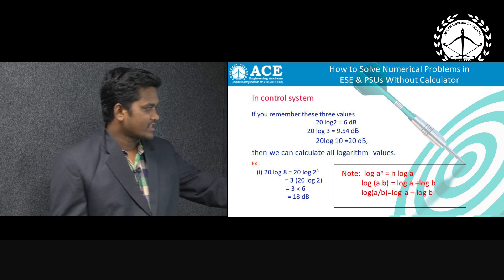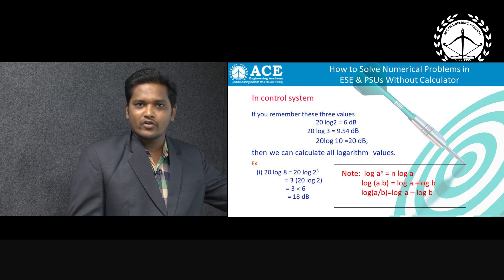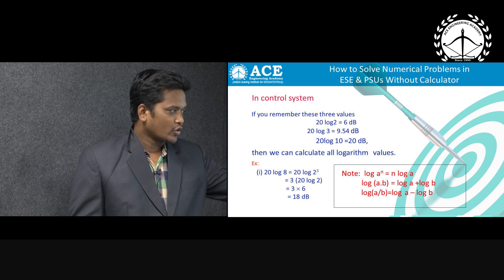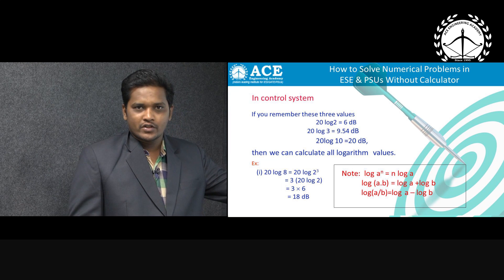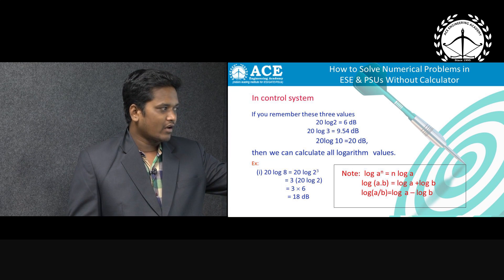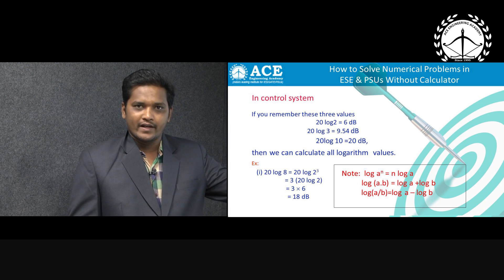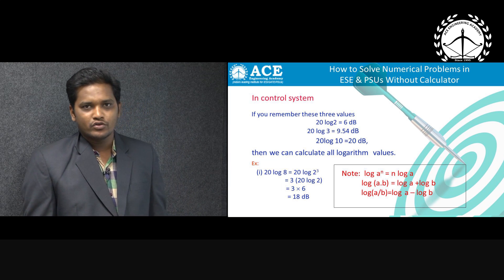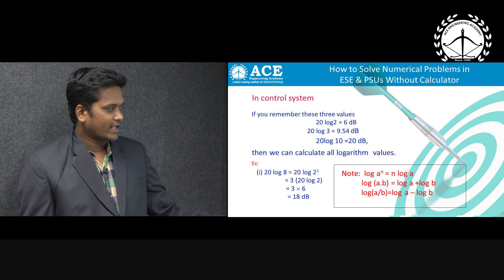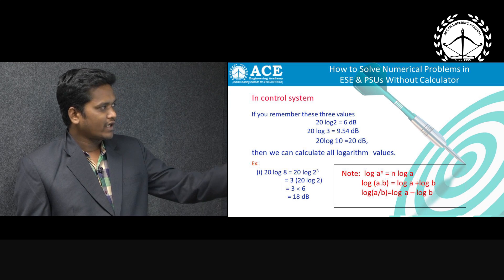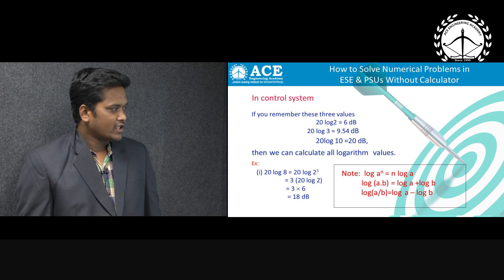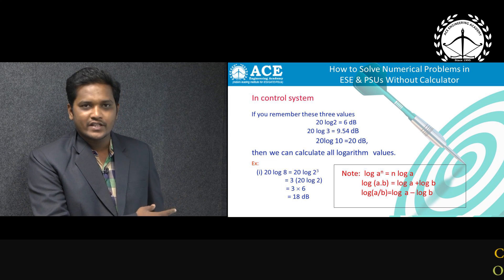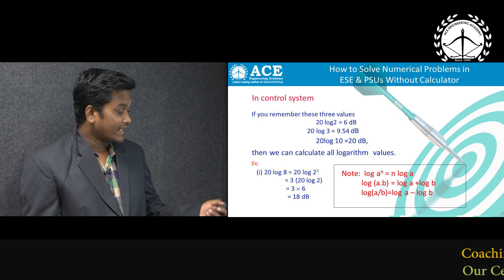First example: how to calculate 20 log 8. We know 8 can be written as 2³. Using the formula log(a^n) = n·log(a), this becomes 3 × 20 log 2. The value of 20 log 2 is 6 dB, so 3 × 6 = 18 dB.